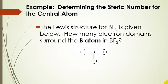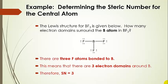Let's do a few examples counting the steric number. Here is the Lewis structure for boron trifluoride. What we see is that there are three fluorines bonded to the central boron. So we have three bonded atoms and no lone pairs on the central atom, which means the steric number is three.